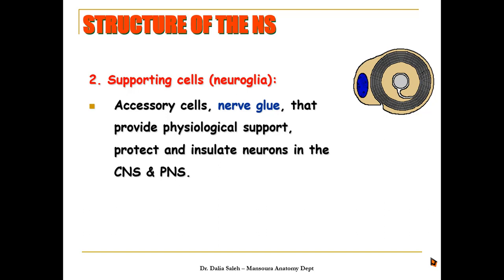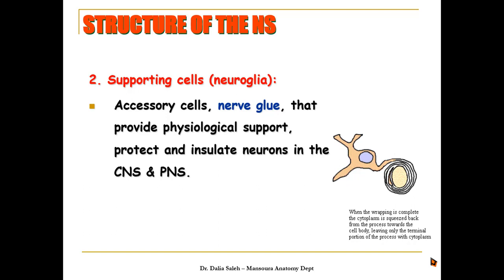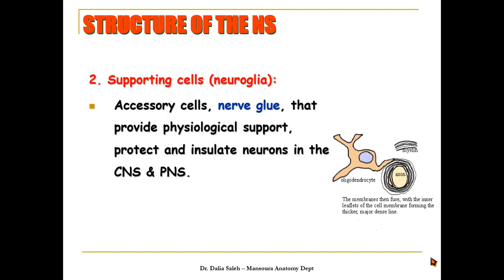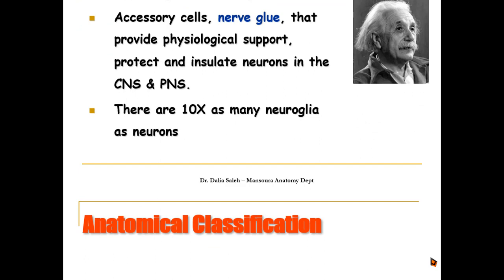The Schwann cells form many layers that surround the axon, forming the myelin sheath of the peripheral nervous system. Inside the central nervous system, a neuroglial cell called oligodendrocytes sends its processes around the axon and wraps around it in many layers, forming the myelin sheath inside the CNS. In the average person there are ten times more neuroglial cells than neurons in the brain. In some people, like Einstein, this ratio is much higher.